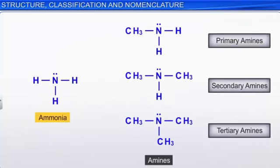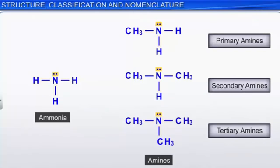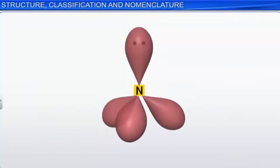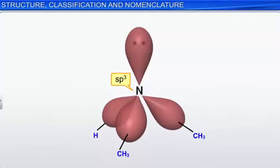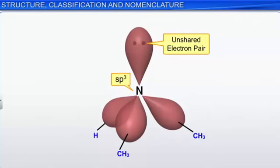Like ammonia, the nitrogen atom of amines is trivalent and carries an unshared pair of electrons. The nitrogen atom in amines is sp3 hybridized. Out of the four sp3 hybrid orbitals, three overlap with the orbitals of either hydrogen or carbon, and the fourth sp3 hybrid orbital contains an unshared pair of electrons. Hence, amines possess pyramidal geometry.